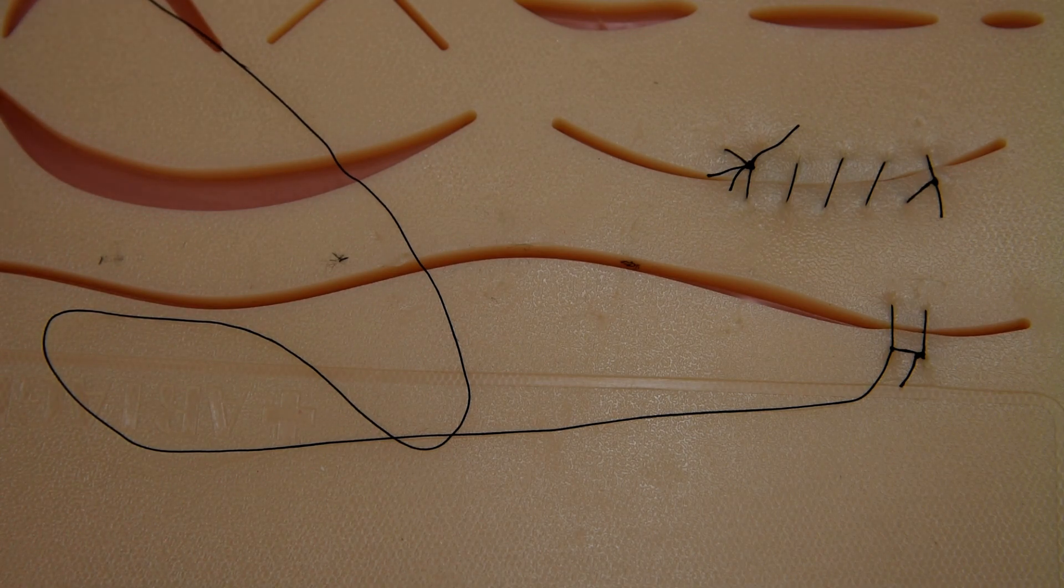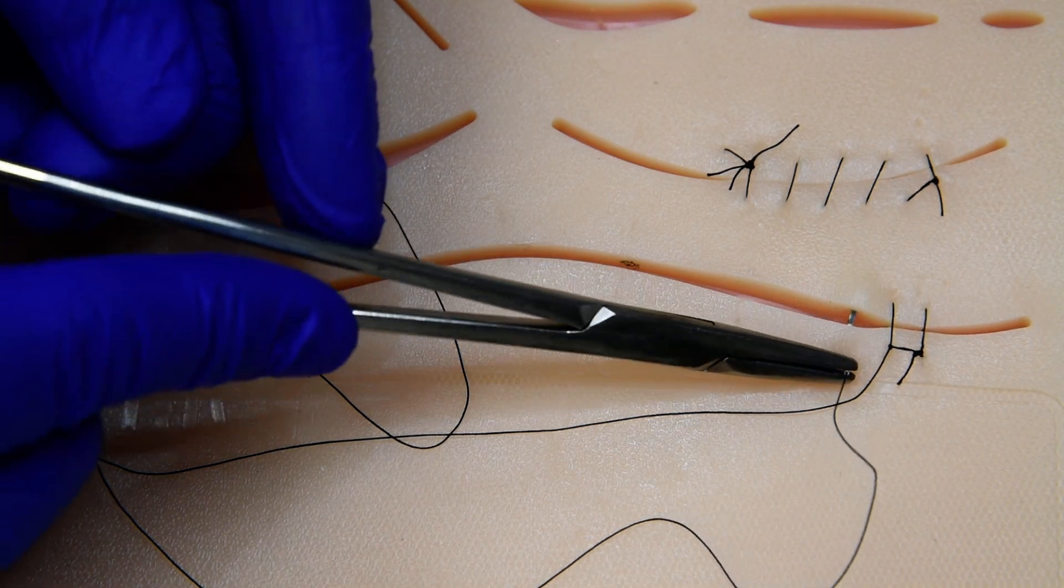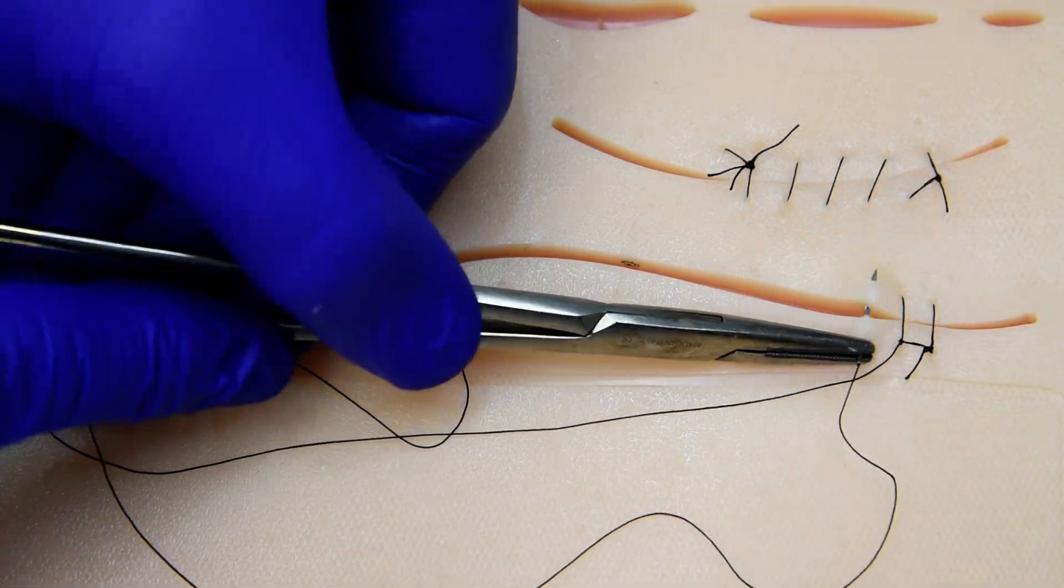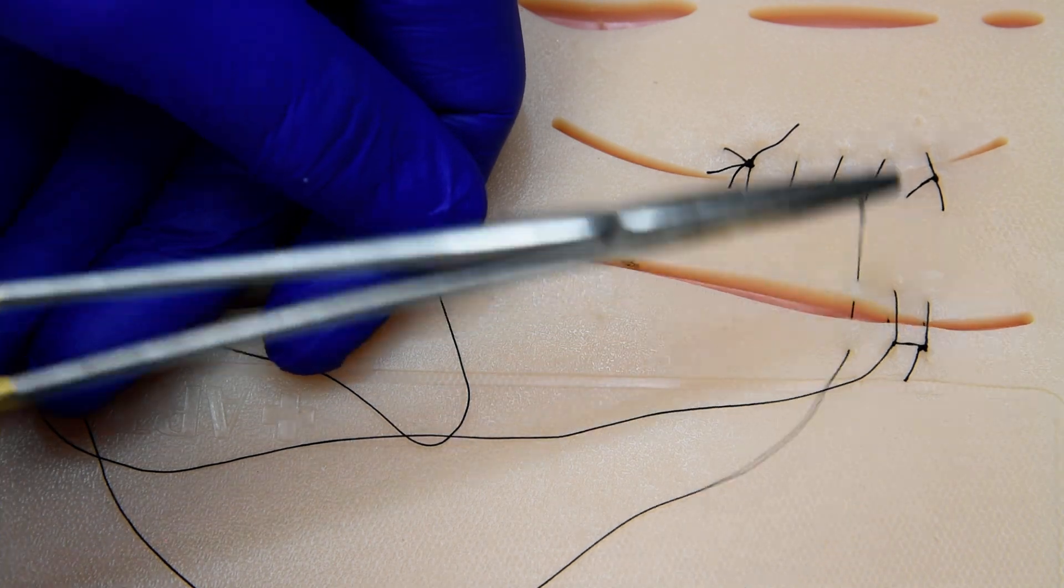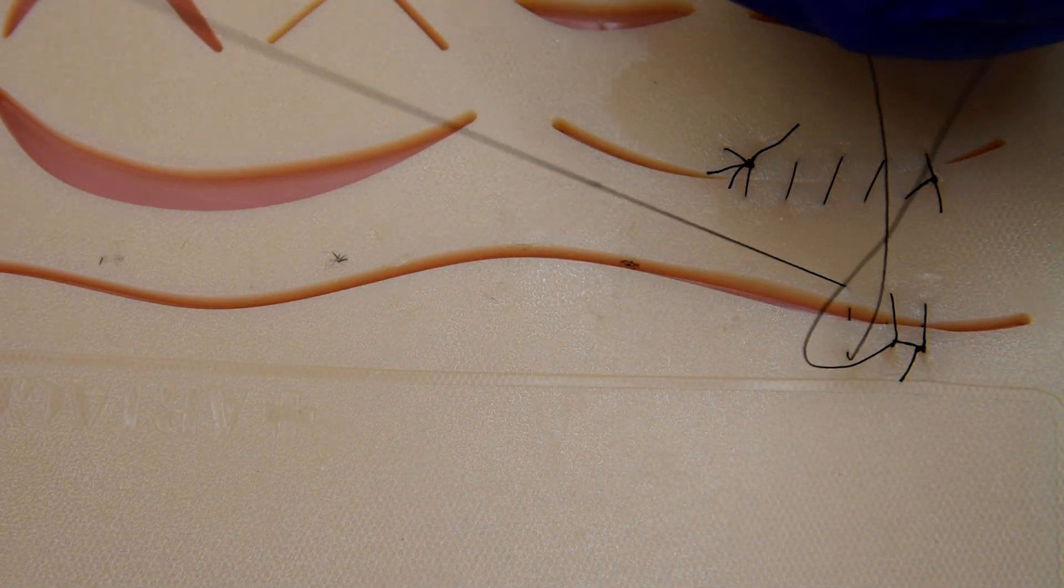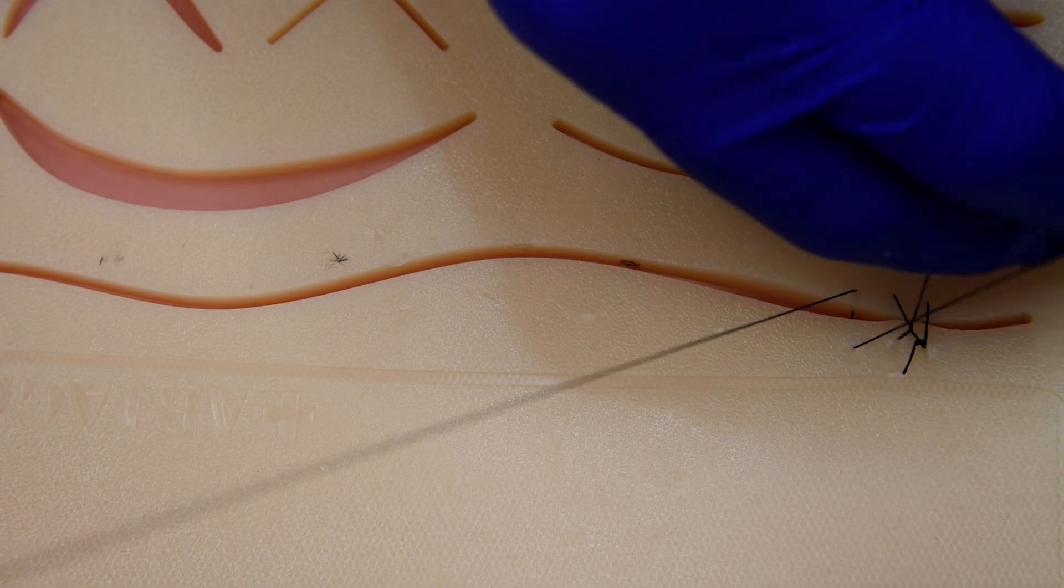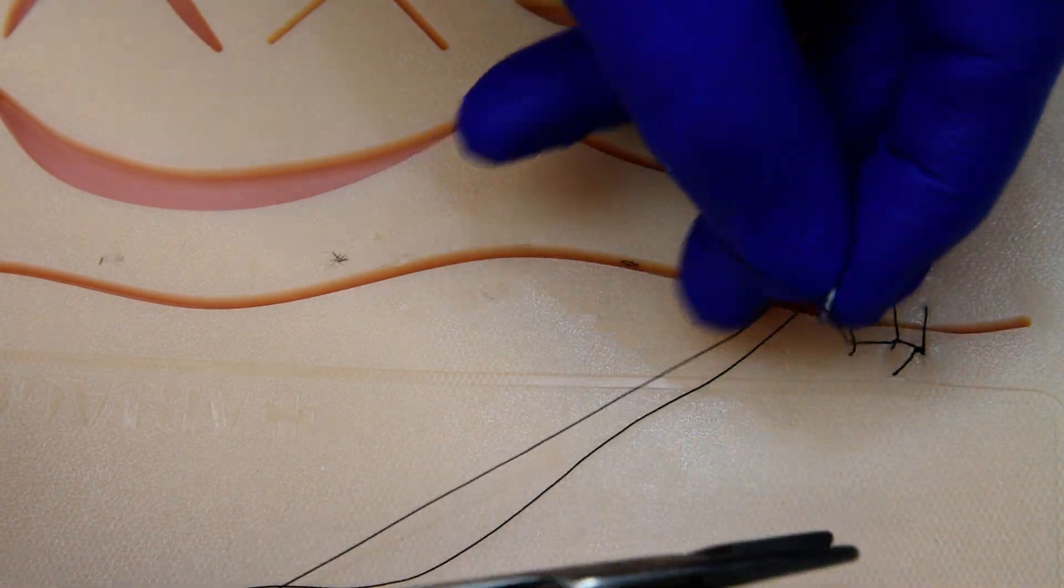We'll go ahead and throw our next row. Similar depth, similar spacing. We're going to leave a loop again. We'll go ahead and twist all the way around, pass it to ourselves,